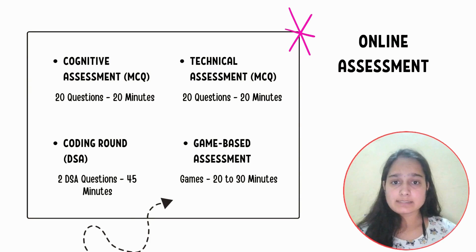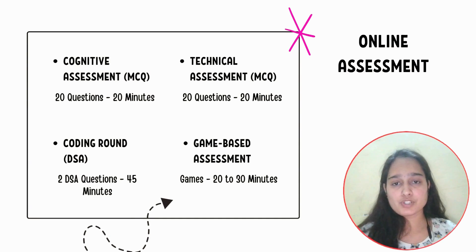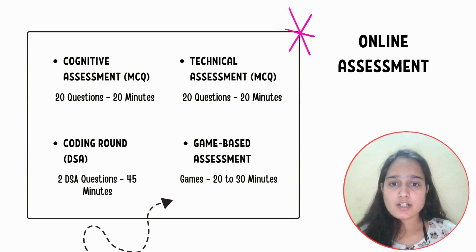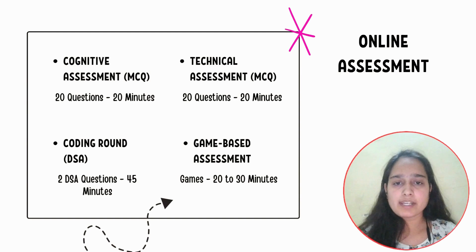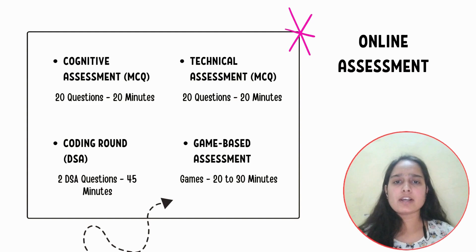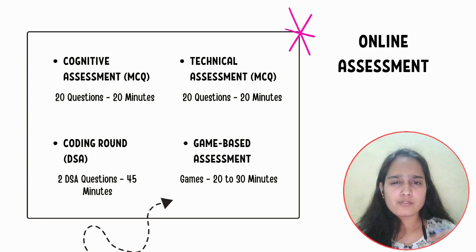The technical assessment is 20 minutes with 20 questions. Topics include core CS fundamentals like DBMS, operating systems, basic data structures, and algorithms. Computer networks were not much asked in the previous year. The level was easy to medium. The tip for this section is to revise all your core subjects beforehand, make notes, and you can follow my doc which I'll add in the description and also watch my video on preparing core subjects for internships and placements.